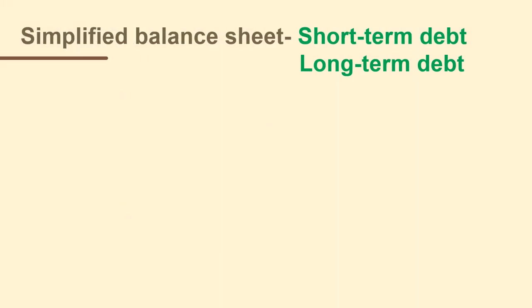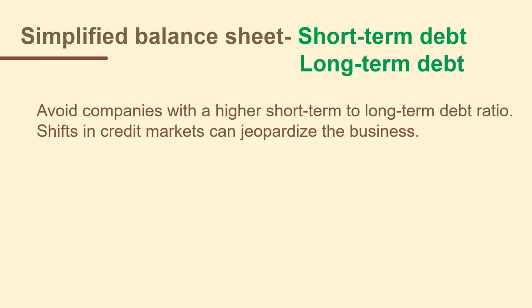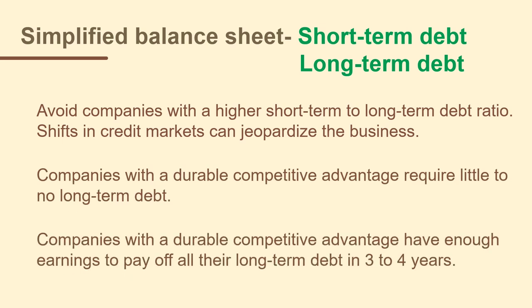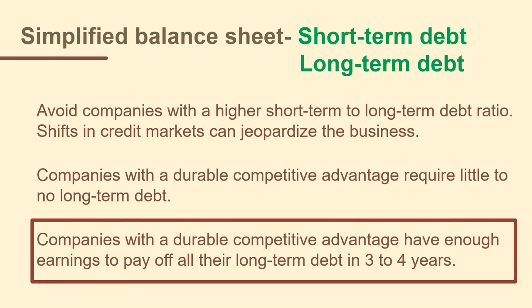On the balance sheet, liabilities are presented in order of when they are to be paid. Short-term debt and accounts payable are to be paid within 12 months and are labeled current. Any portion of long-term debt due within one year is also listed under the short-term debt line item. Warren carefully scrutinizes just how much short-term and long-term debt a company has. He shies away from companies with a higher short-term to long-term debt ratio. Companies with a durable competitive advantage require little to no long-term debt — they are self-financing from their business operations. Warren reviews just how much long-term debt load a company has had for the past 10 years. Companies with a durable competitive advantage have enough earnings to pay off all their long-term debt within three to four years.